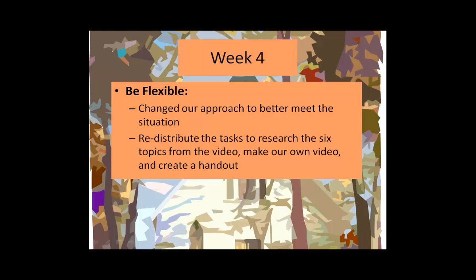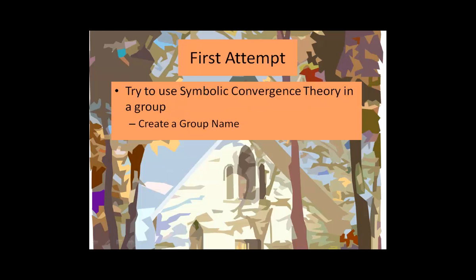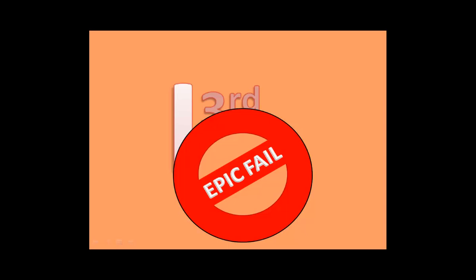Tasks were redistributed and assigned: six people research the topics, someone makes a video, and a couple of people make a handout. During this time, the leader John wanted to bring the group together by creating a group name. This became the first attempt at symbolic convergence theory. The suggestion was 'Third Leg' — it was humorous, had a technical meaning for the third phase of electrical power, and could be symbolic. It was a failure. It was only embraced by a few members of the group and did not inspire additional embellishment or fantasy.